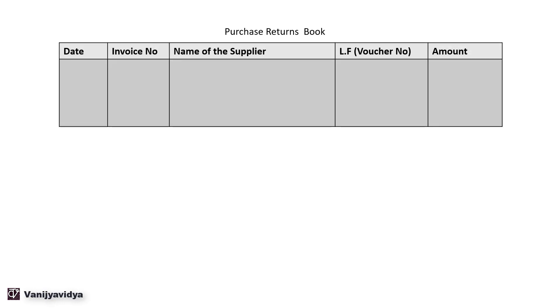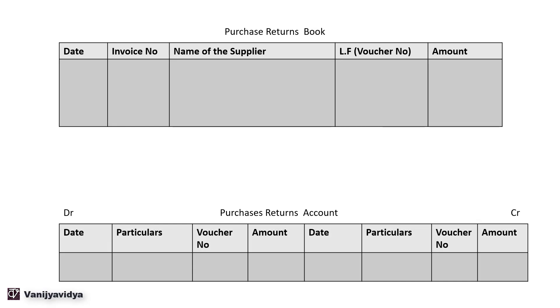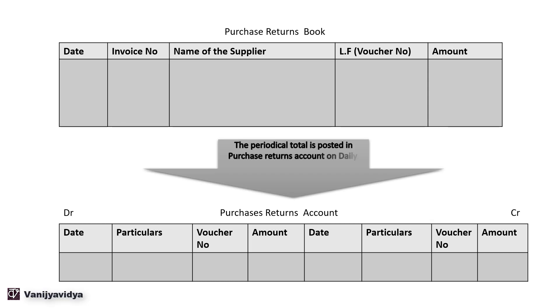Now let us see the format of the purchase returns book. It contains date, invoice number, name of supplier, voucher number, and amount — similar to the purchase book. The purchase returns account is a ledger account with debit and credit sides containing date, particular, voucher number, and amount. The periodical total is posted in the purchase returns account on a daily, weekly, fortnightly, or monthly basis depending on policy. This concludes the topics of purchase journal and purchase returns book, also known as purchase day book and purchase returns day book.